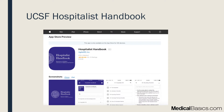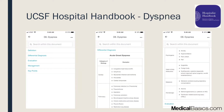One of the resources I found recently is the UCSF Hospitalist Handbook. Essentially, it's the cliff notes for UpToDate. It gives you very high yield information very quickly — not too much, but only the highest yield. For example, if we look at dyspnea, they break it down into different definitions, the differential, the evaluation, and the management.